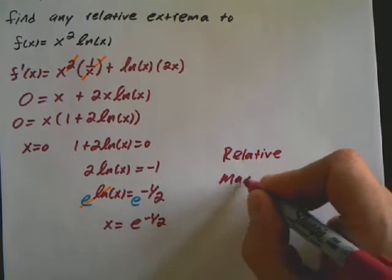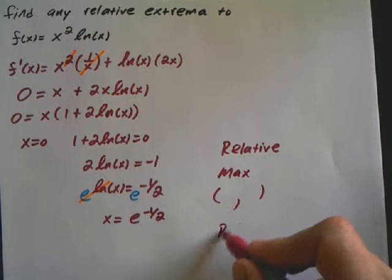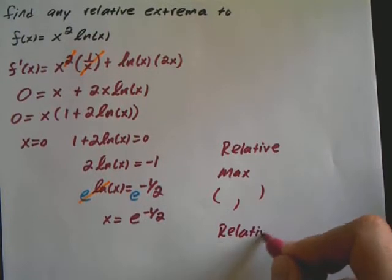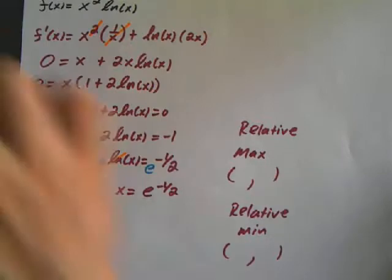So I'll put relative max, and I'll be looking for your ordered pair and relative min, and see what you guys come up with. Alright, and that's all.